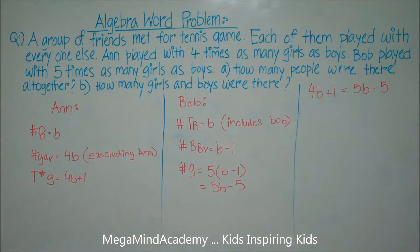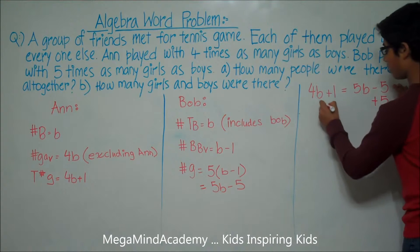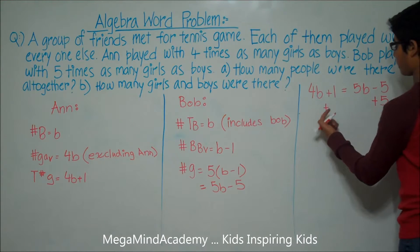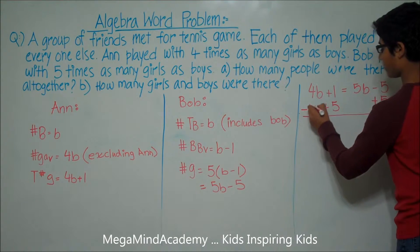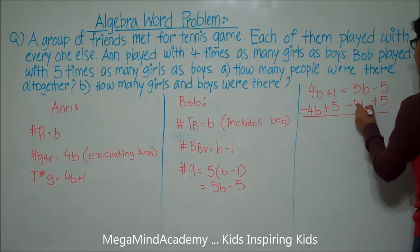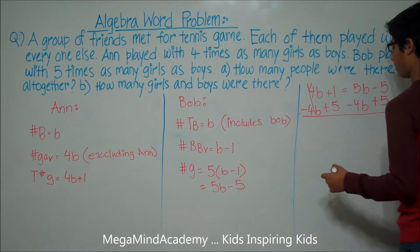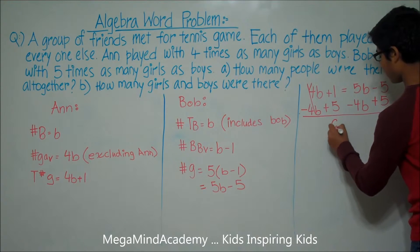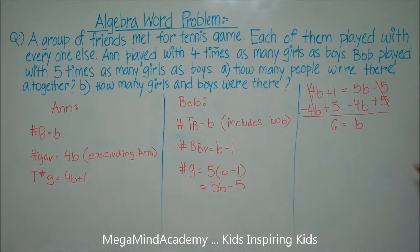Let's get the variables on one side and the numbers on the other side. We can add five to both sides of the equation, and subtract 4B from both sides. So 4B minus 4B cancels out. One plus five is six, which is equal to 5B minus 4B, which is equal to B. And negative five plus five cancels out. So we get B is equal to six.